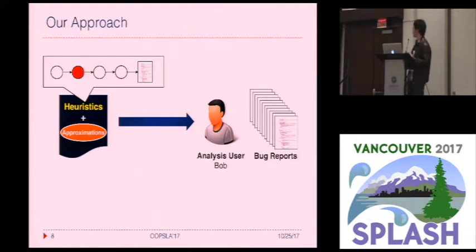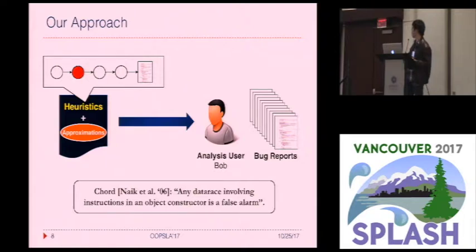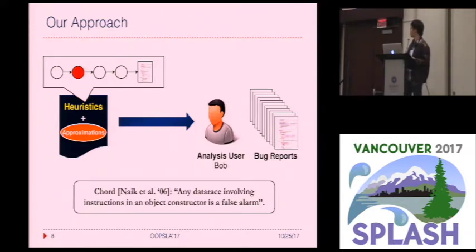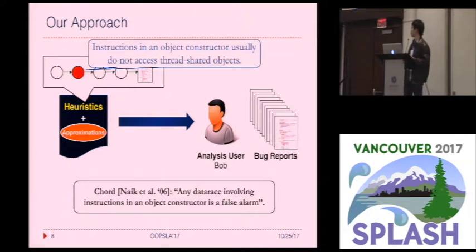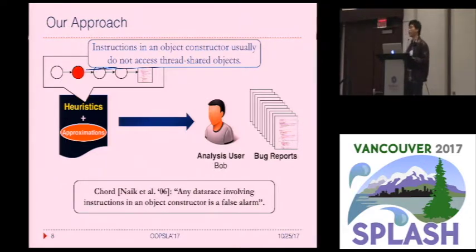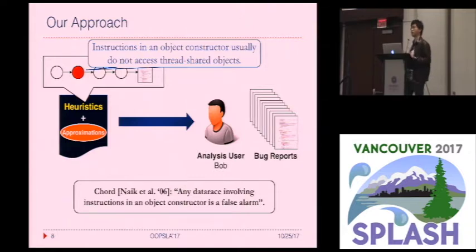For example, here is a heuristic from Kurt, a race detector for Java programs. It says for any data race that involves instructions in an object constructor, it is a false alarm. Internally, it translates to removing thread-shared facts which are related to instructions in an object constructor, because such instructions also operate on the object being constructed, and this object often stays thread-local until the constructor returns.